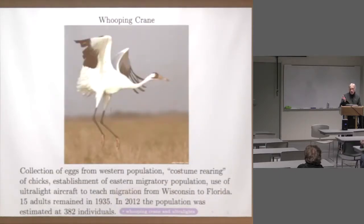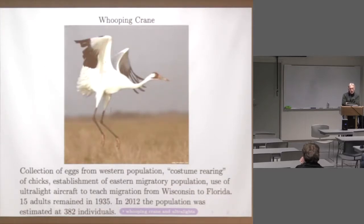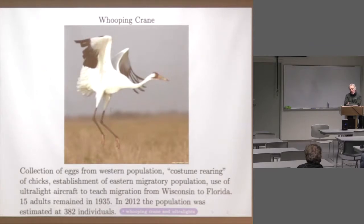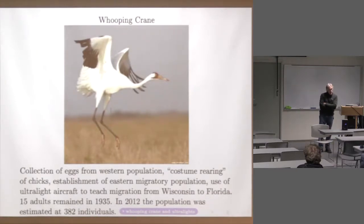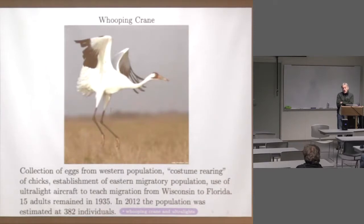The question for Kirtland's warbler is: when do you start modifying and improving habitat? The whooping crane is another high-profile species. The western population was estimated to be down to about 15 adults in 1935. The breeding grounds are in Wood Buffalo Park in Alberta, and the cranes migrate down to Texas. By providing greater protection and improving habitat in both the breeding and over-wintering grounds, the population is now up to 382.